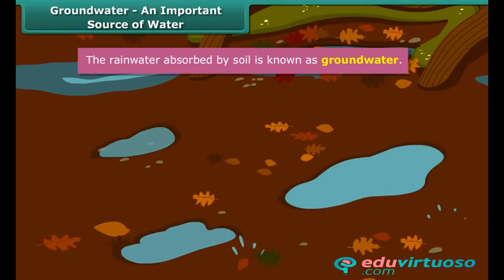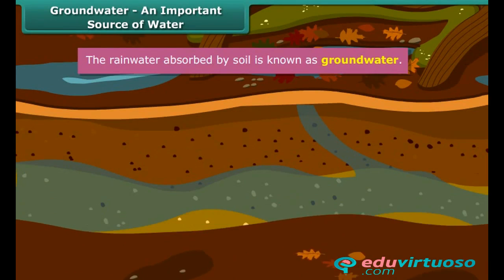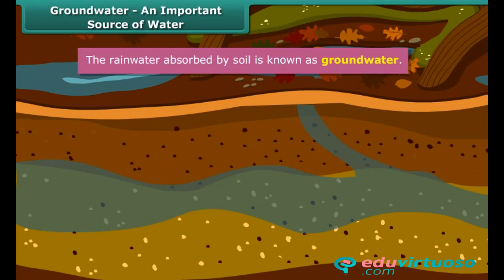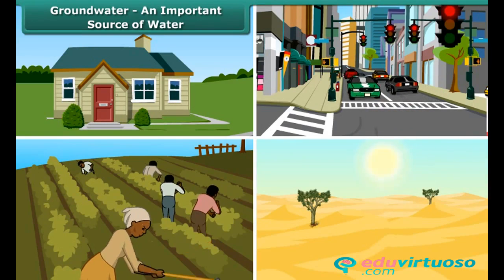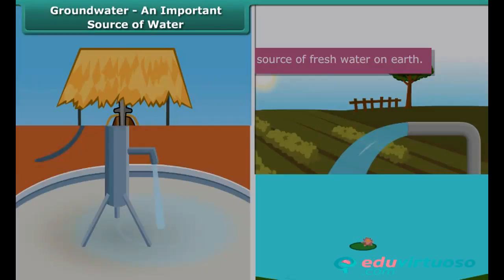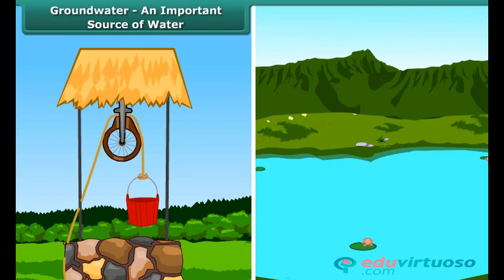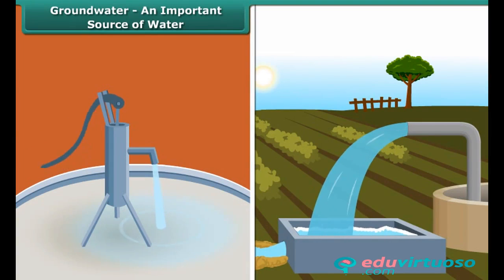Water absorbed by the soil is known as groundwater. Although it is not visible, it is almost everywhere, flowing beneath the ground under homes, cities, farms, and deserts. Groundwater is an important source of fresh water on Earth. It is the source of water for many lakes and wells, and many of us drink groundwater every day, tapped by hand pumps and tube wells.